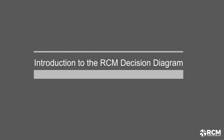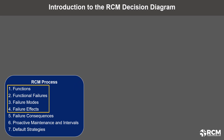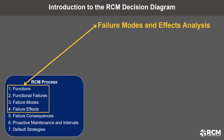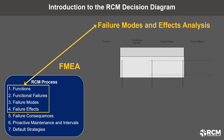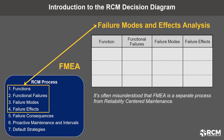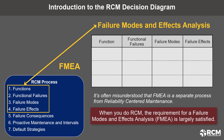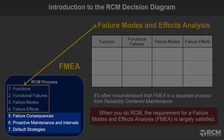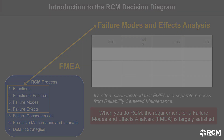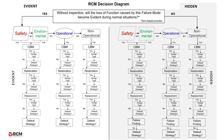Introduction to the RCM Decision Diagram. The first four steps in the RCM process generate a failure modes and effects analysis, also known as an FMEA. It's often misunderstood that FMEA is a separate process from reliability-centered maintenance, but when you do RCM, the requirement for a failure modes and effects analysis is largely satisfied. Now that we have our FMEA completed, we can move on to the last three steps in the RCM process, and we complete those steps by utilizing the RCM Decision Diagram.